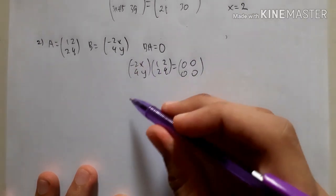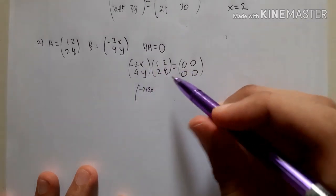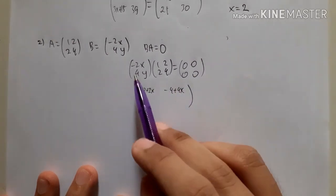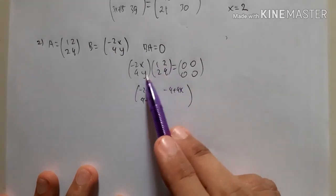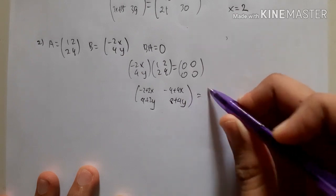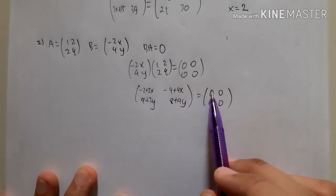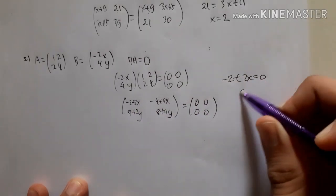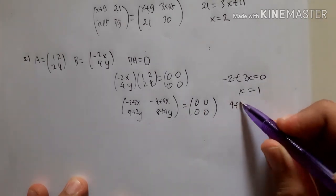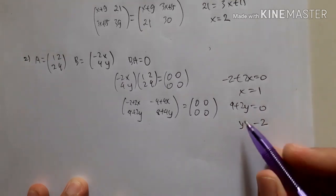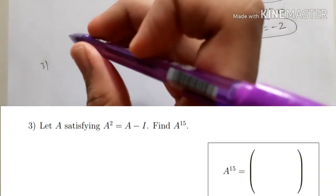Multiplying out B×A: top-left entry is -2+2x = 0, so x = 1. Top-right is -4+4x = 0, consistent with x = 1. Bottom-left is 4+2y = 0, so y = -2. Bottom-right is 8+4y = 0, also consistent. Therefore x = 1 and y = -2 is the answer for number two.